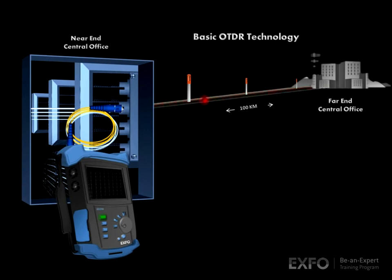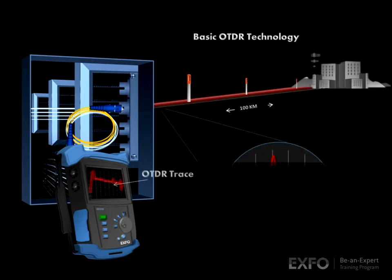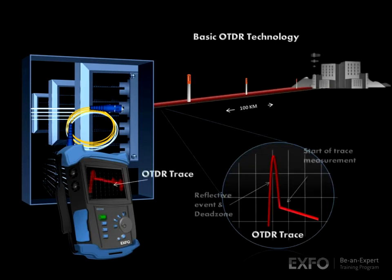Let's travel down a 100 kilometer fiber and see a sample of different optical events that the OTDR can detect. The first event is reflective and located right at the OTDR port. Because the OTDR is mechanically connected to the fiber under test, the connection creates an air gap, which causes a reflective dead zone where no measurement can take place.